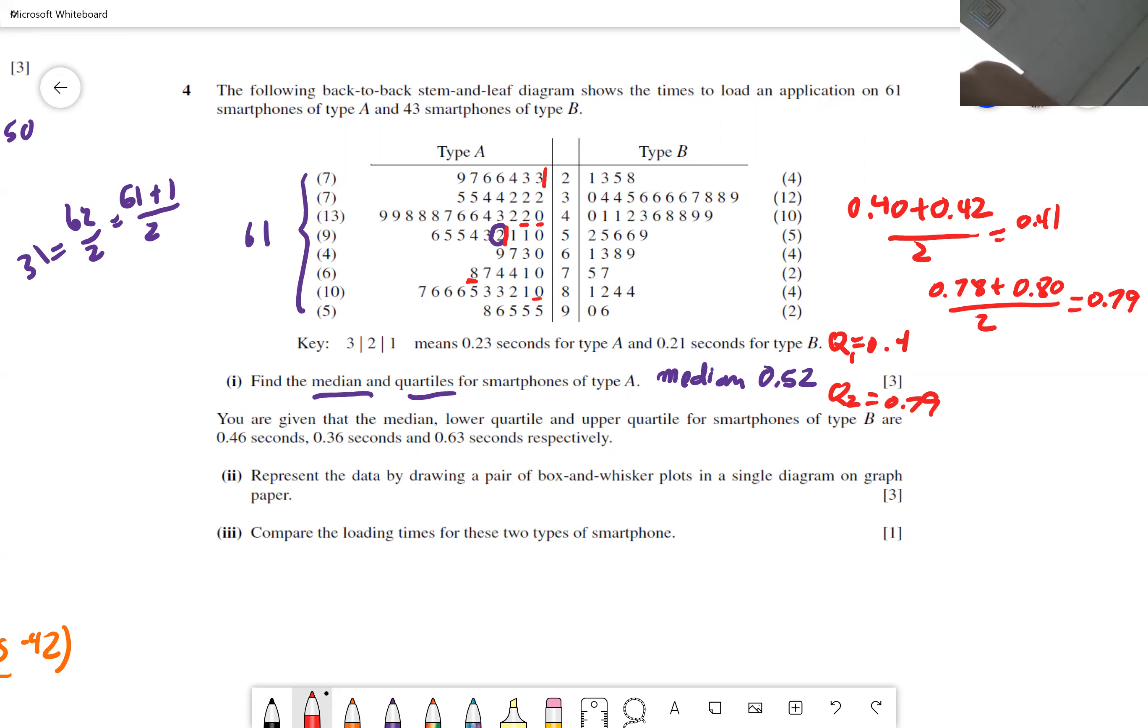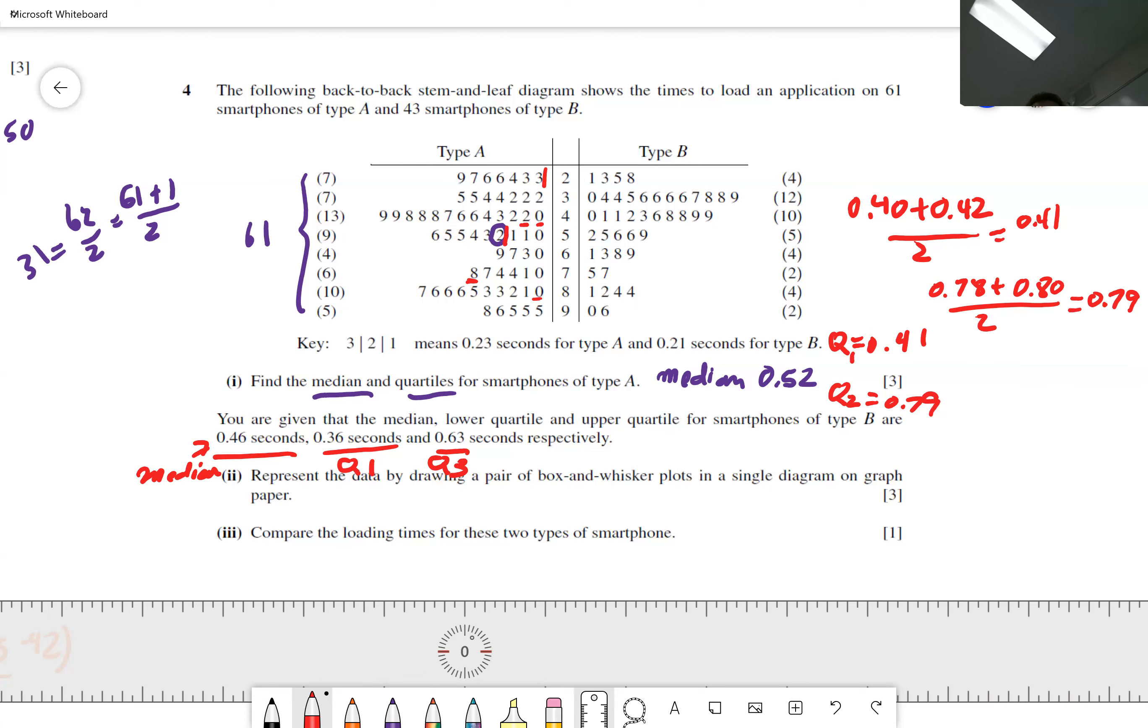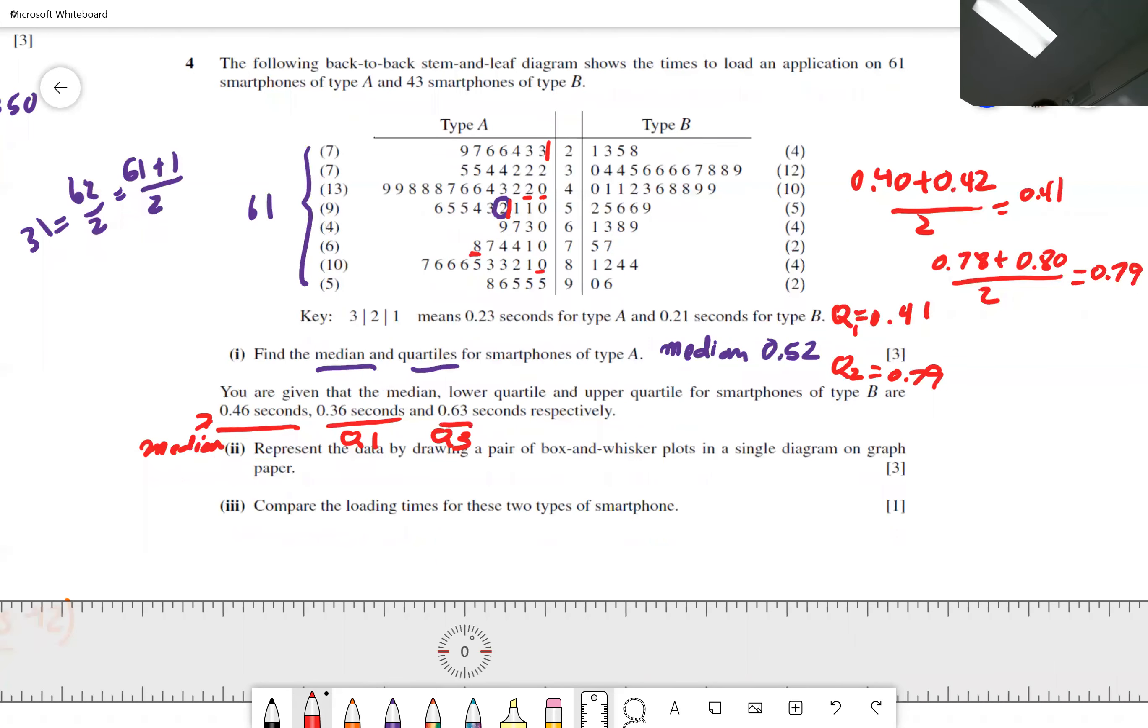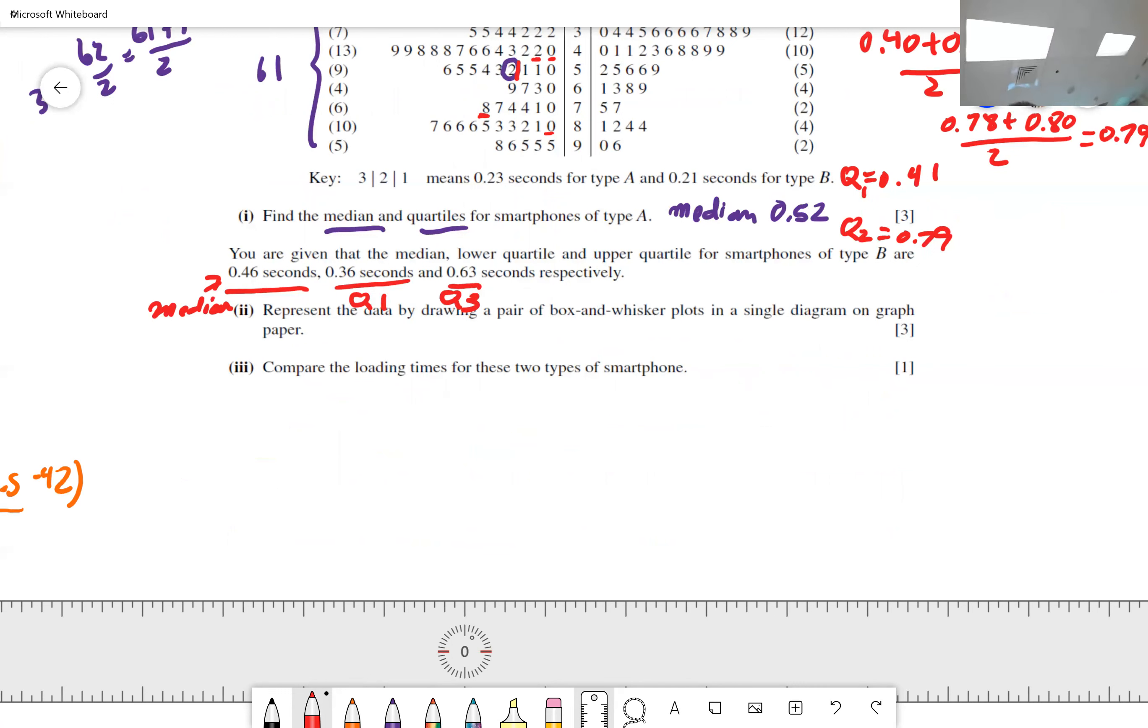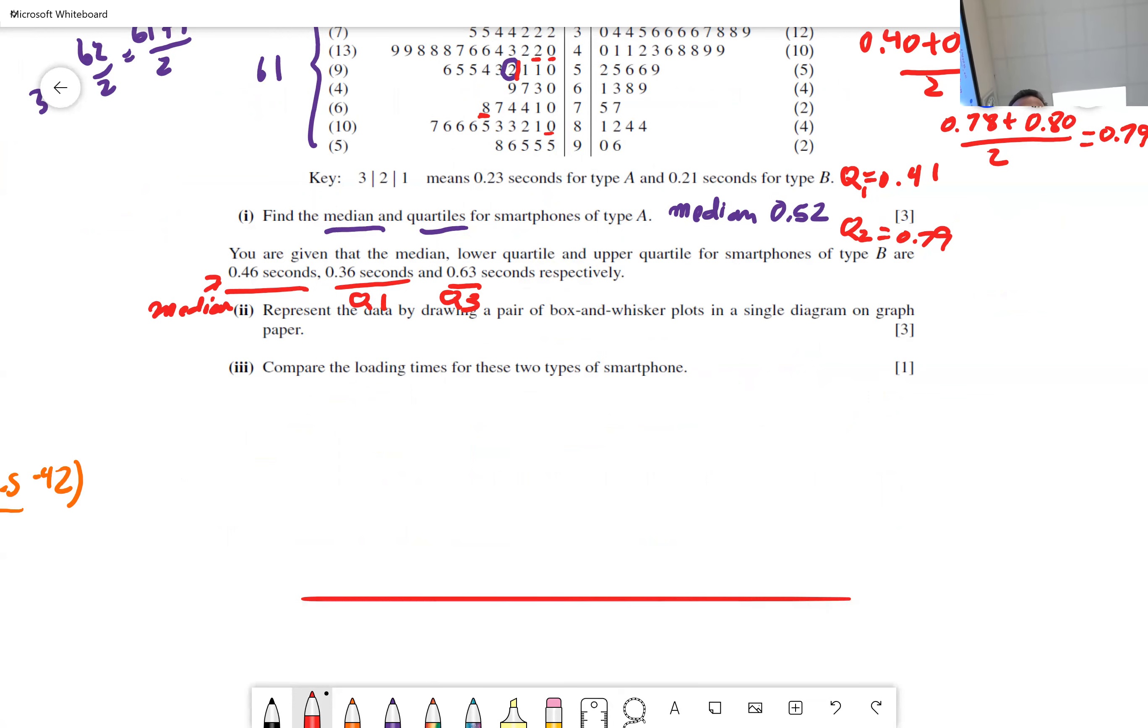Now, the next one says, you're given the median, lower quartile, and upper quartile for smartphones of type B are 0.46, that's the median. 0.36 is the first quartile or lower quartile. And the upper quartile, the third quartile is 0.63 respectively. Represent the data by drawing a box and whisker plot. It says represent the data by drawing a pair of box and whisker plots in a single diagram on a graph paper. So they want you to do for type A and type B.